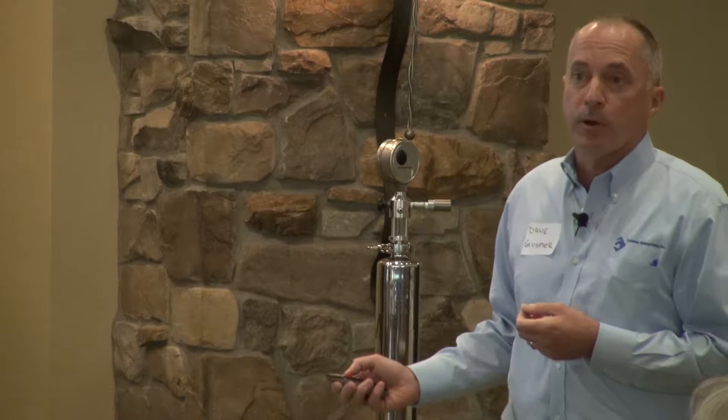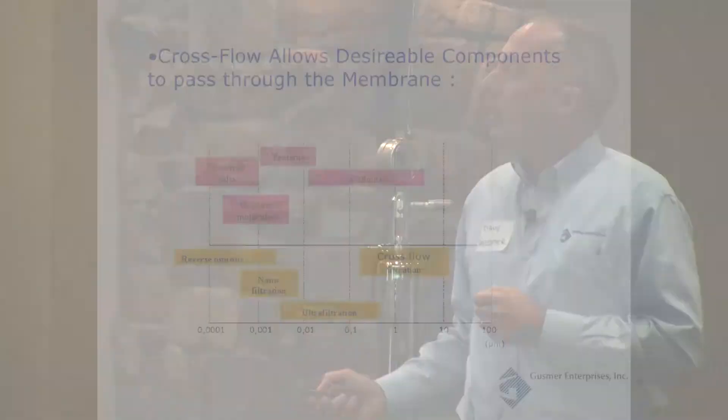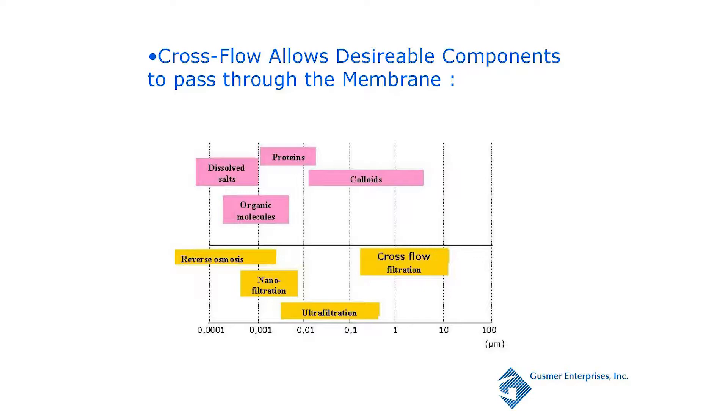We want to take out yeast and bacteria. What we don't want to take out are the good components — the proteins, colloids, organic dissolved salts. Some of these could be removed with RO if you were looking for VA reduction or alcohol removal, but we're not going to focus on that today.